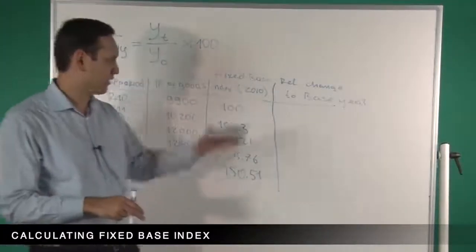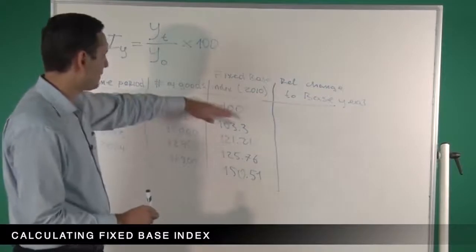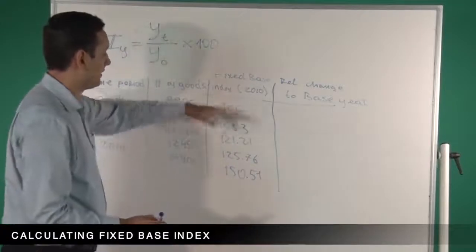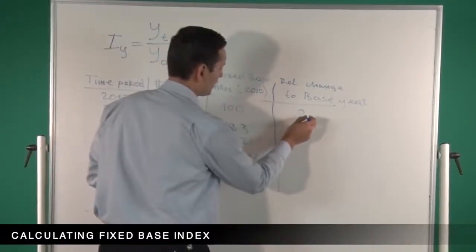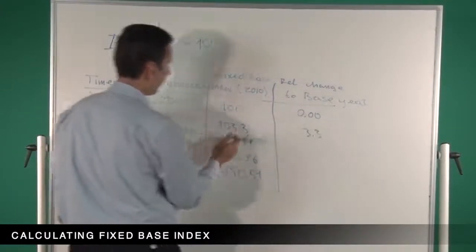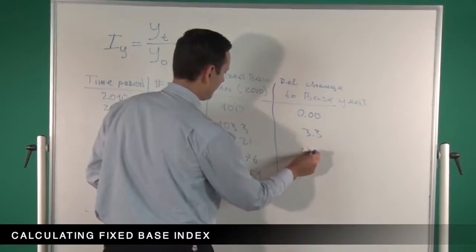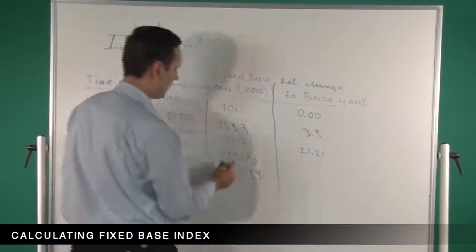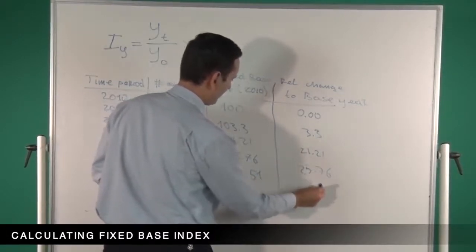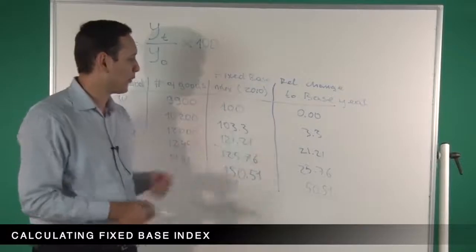The next thing we may want to consider is the relative change to base year, where we compare all these indexes with the base year. So if we compare the first one, the relative change is 0. The relative change for 2011 is 3.3, and so on. We basically subtract 100 from each of these numbers: 0.5, 0.76, and 50.51, which is very easy and just simple arithmetic.